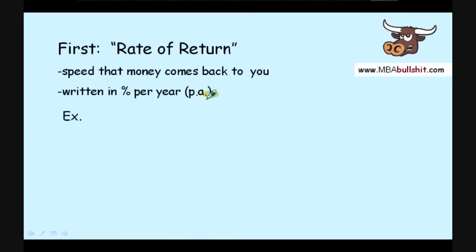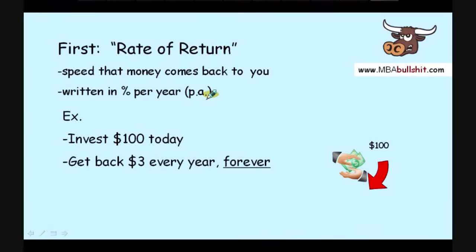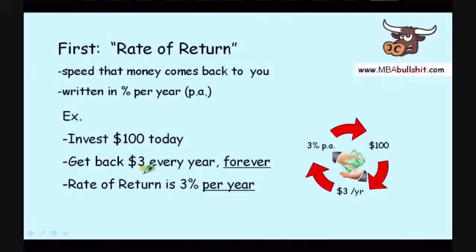As an example, to make it more clear for you, in case you're still confused, don't worry. Let's just say that you invest $100 today and then you get back $3 every year forever. In this case, we can say that the rate of return is 3% per year. Why is it 3% per year? Because $3 is exactly 3% of $100 and you're getting it per year or per annum.